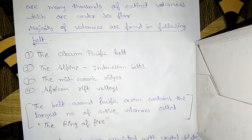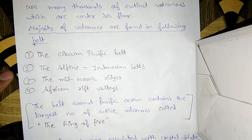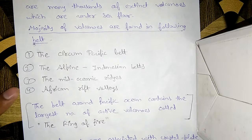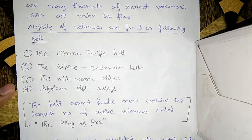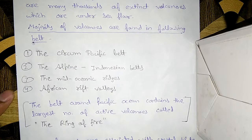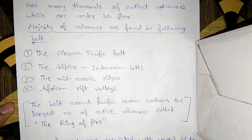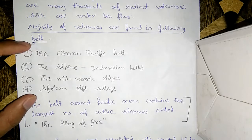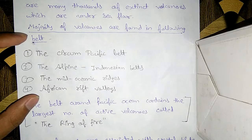The majority of volcanoes are found in the following belts. The first is the Circum-Pacific Belt, located in the Pacific Ocean. The second is the Alpine-Indonesian Belt, located in Indonesia. The third is the Mid-Oceanic Ridges, between the oceans. And the fourth is the African Rift Valleys.